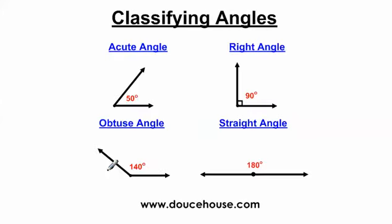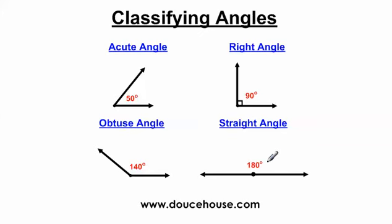To sum things up: an acute angle is less than 90 degrees, a right angle is exactly 90 degrees, an obtuse angle is between 90 and 180 degrees, and a straight angle measures exactly 180 degrees. Hopefully this helps you understand angles a little bit better. Have a good day — bye bye.